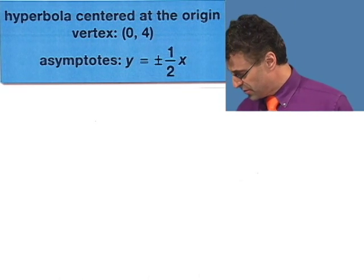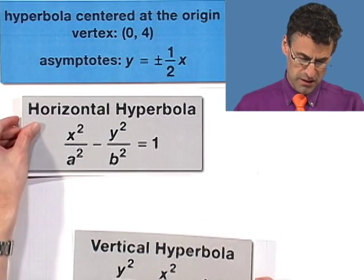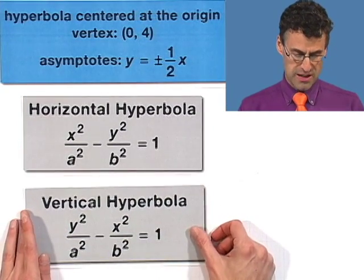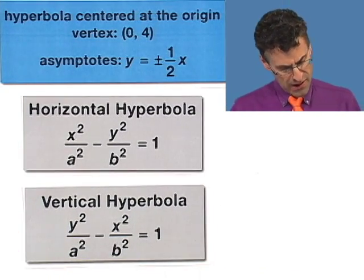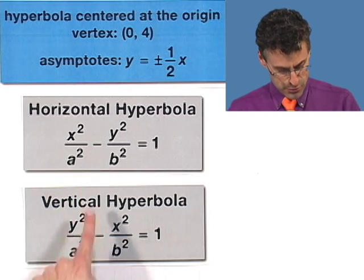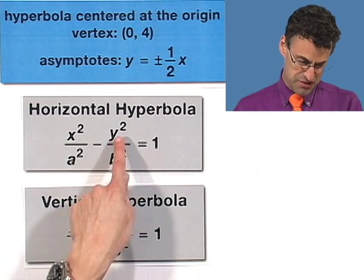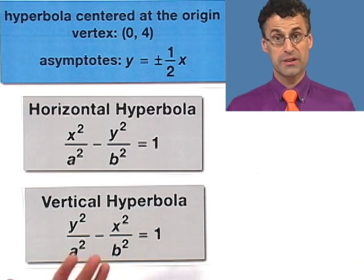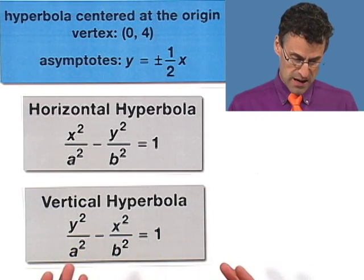Well the first thing we have to do is figure out is this a horizontal hyperbola or is it a vertical hyperbola? That of course is going to all be determined by kind of where that negative sign should go. Should the negative sign be in front of the y² term or the x² term? We have to figure out by looking at kind of what's going on here.